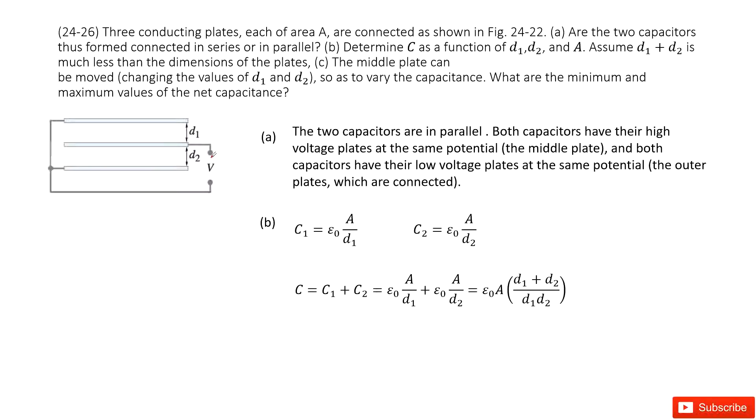We can see the voltage between these two points is V. From this side to this side, this is the potential difference V. The potential at these points are equal, so the potential difference for capacitor C2 is V.